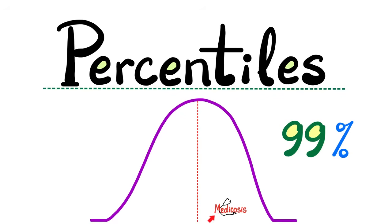What is going on, wonderful people? It's Medicosis Perfectionelis. Welcome back to my statistics playlist. In previous videos, we have talked about the normal distribution, the measures of central tendency such as the mean, the median, and the mode. We talked about the range, Pearson's correlation coefficient, descriptive statistics versus inferential statistics, quantitative versus qualitative variables, numerical versus categorical variables, discrete versus continuous variables, nominal versus ordinal variables, independent versus dependent variables, and much more.